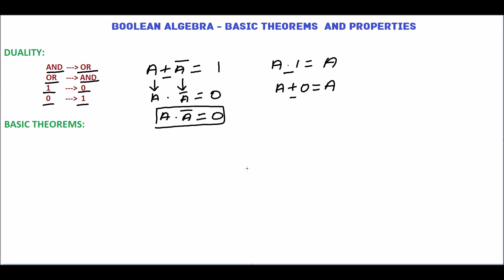Next we will see some basic theorems. The first theorem is a + a = a. To prove this, write a + a, which can be written as a + a · 1, because a · 1 = a.